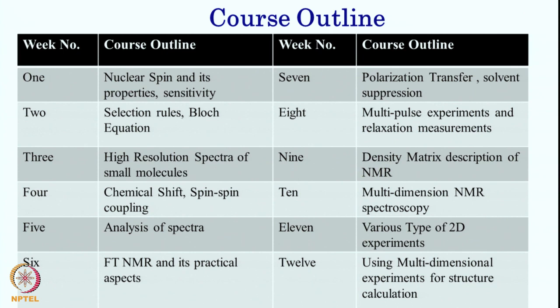In the seventh week we go to advanced concepts like polarization transfer and solvent suppression, which are used for protein structure determination. In the eighth week we will deal with multipulse experiments and relaxation measurements. Then in the ninth week we will develop quantum mechanical concepts using the density matrix description of NMR. In the tenth week we will deal with multidimensional NMR spectroscopy. In the eleventh week we will deal with various types of 2D experiments for protein and peptide structure determination. We will conclude with how to determine protein or peptide structure using NMR spectroscopy. Thank you, and we look forward to your active participation.